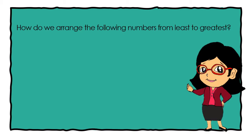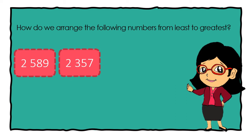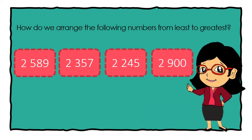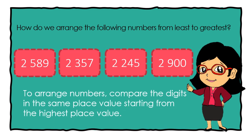Now let's study the ordering of numbers. How do we arrange the following numbers from least to greatest? 2,589 — 2,357 — 2,245 — and 2,900. To arrange numbers, compare the digits in the same place value starting from the highest place value. We start comparing on the thousands place. Since they all have the same digit in the thousands place, we move to the hundreds place.